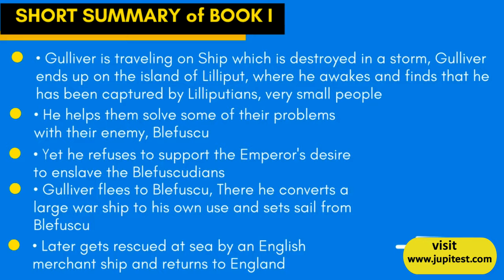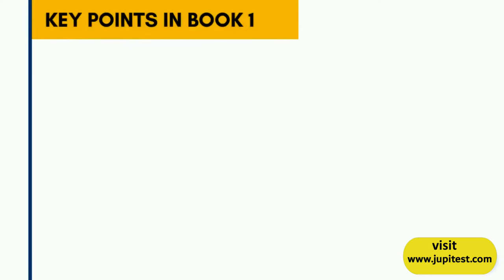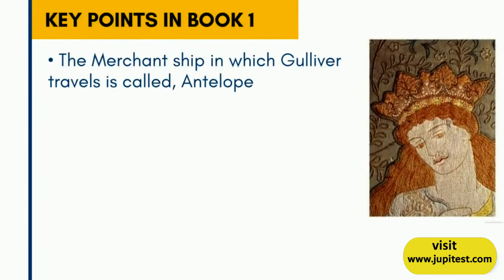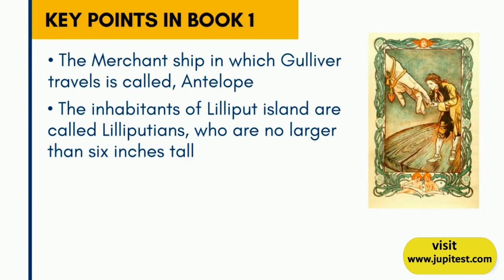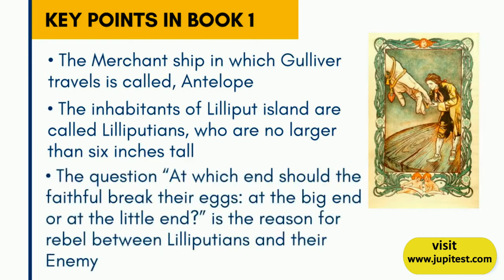He later gets rescued at sea by an English merchant ship and returns to England. Key points in Book 1: The merchant ship in which Gulliver travels is called the Antelope. The inhabitants of Lilliput Island are called Lilliputians, who are no larger than six inches tall. The question of at which end the faithful should break their eggs — at the big end or the little end — is the reason for the conflict between the Lilliputians and their enemy.